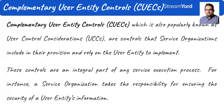Complementary user entity controls refer to the different types of controls followed by the user entity while working with the service organization. In short, what are the security best practices and security controls that I, as a customer investment bank, am following to ensure that the service organization — AWS in this case — gets appropriate support in terms of safeguards? Am I following proper encryption protocols, providing proper access controls, and monitoring their activity on the network? Am I doing my part? This is what CUECs stand for.